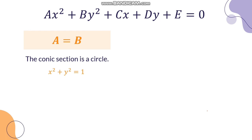For example, X squared plus Y squared equals 1. Here A is 1 and B is also 1, so they are equal. Again, if A and B are equal, then it is a circle.